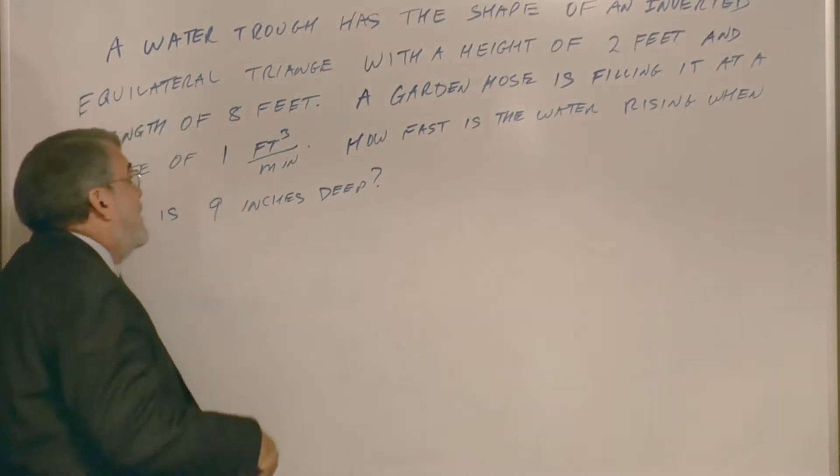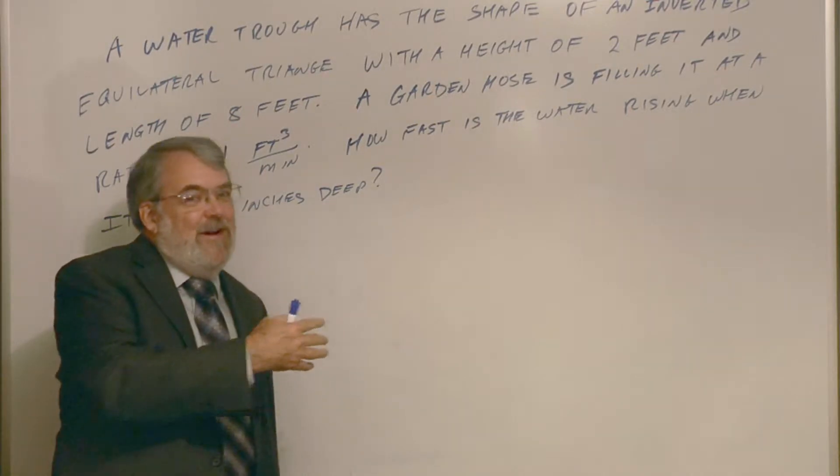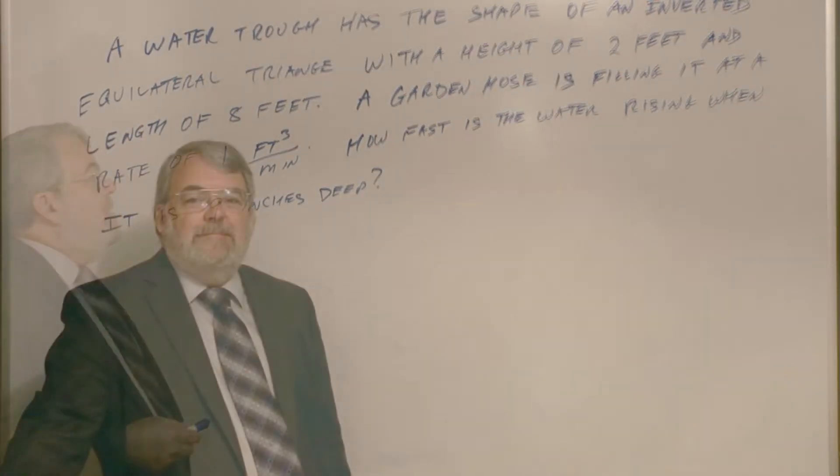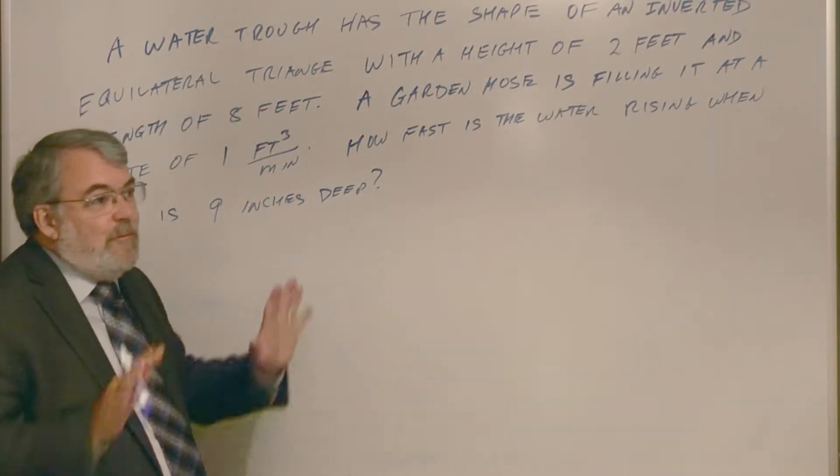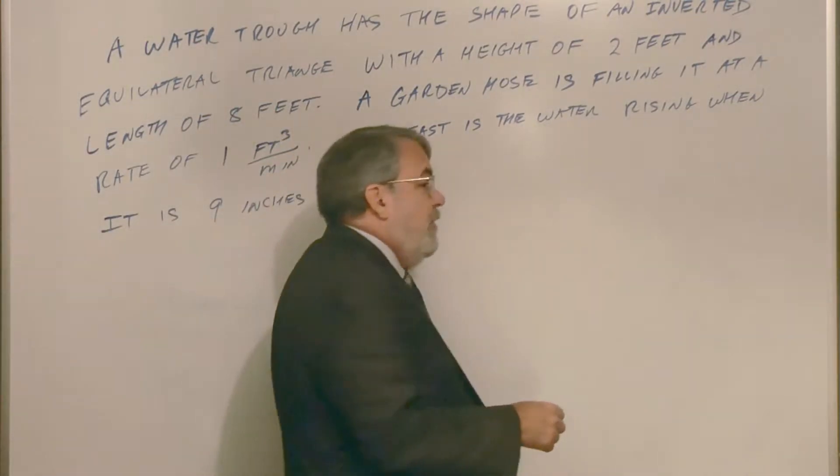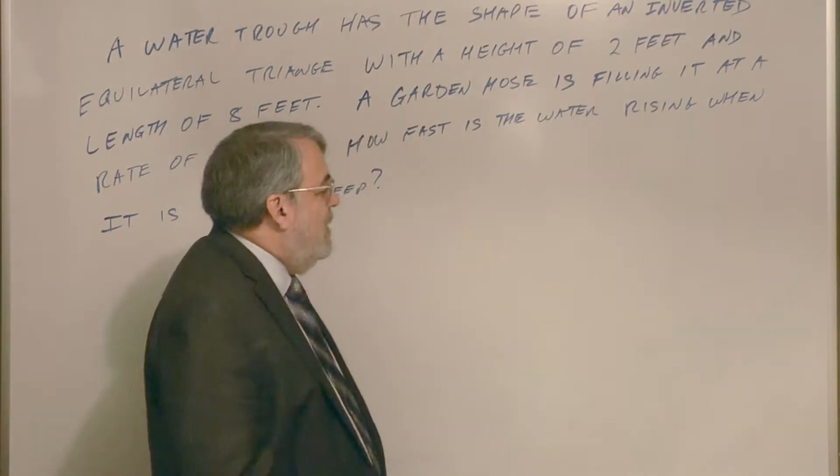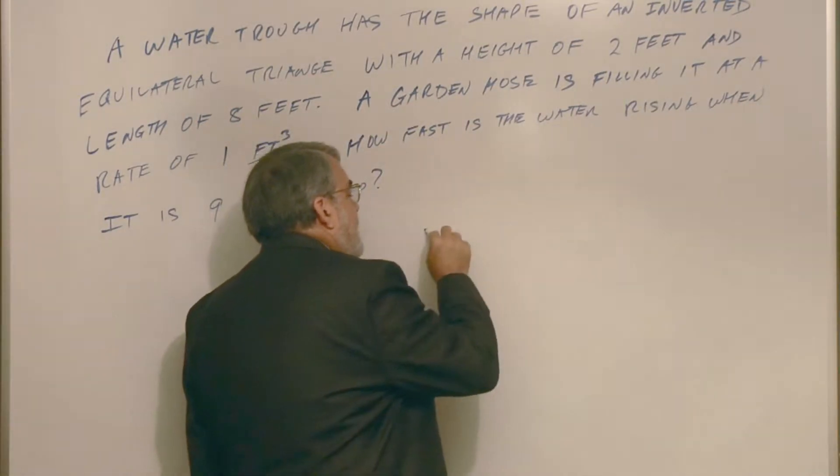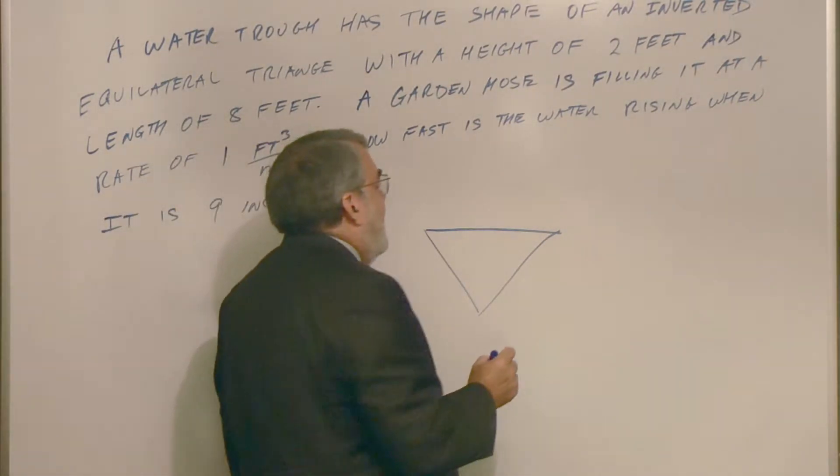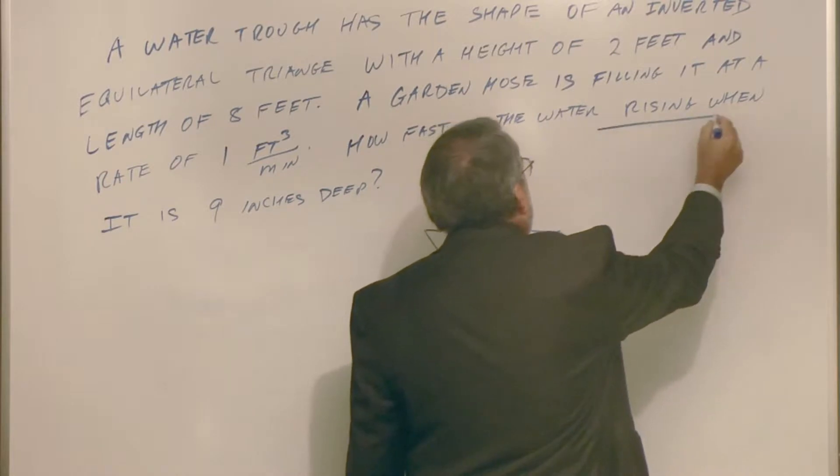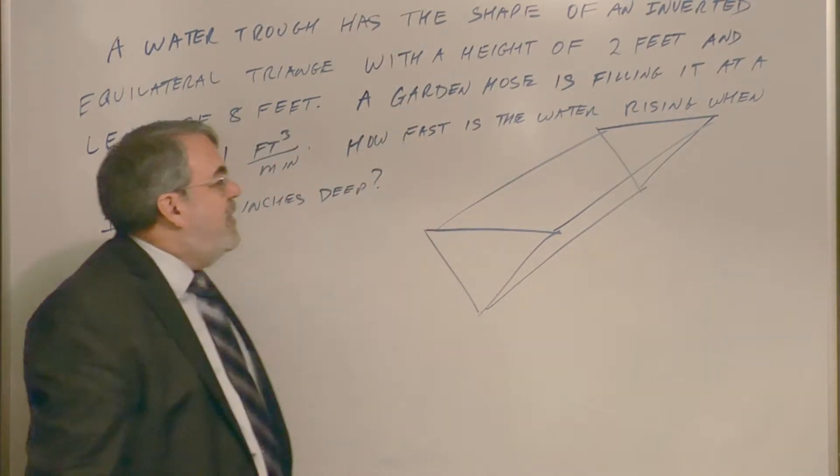Anyway, now back to this problem. As always, I encourage you to pause the video and try it yourself, see what you can get. Well, here we go. The inverted equilateral triangle. I hope that's kind of clear what I'm talking about there. If you've watched the old Westerns and, you know, people, cowboys bring their horses up to a trough.